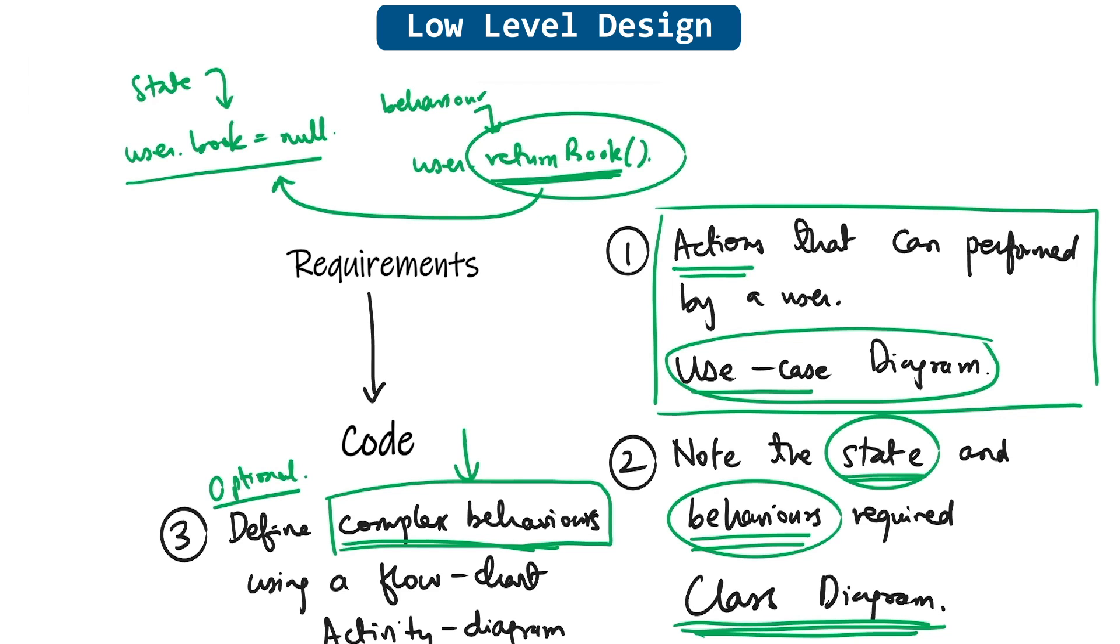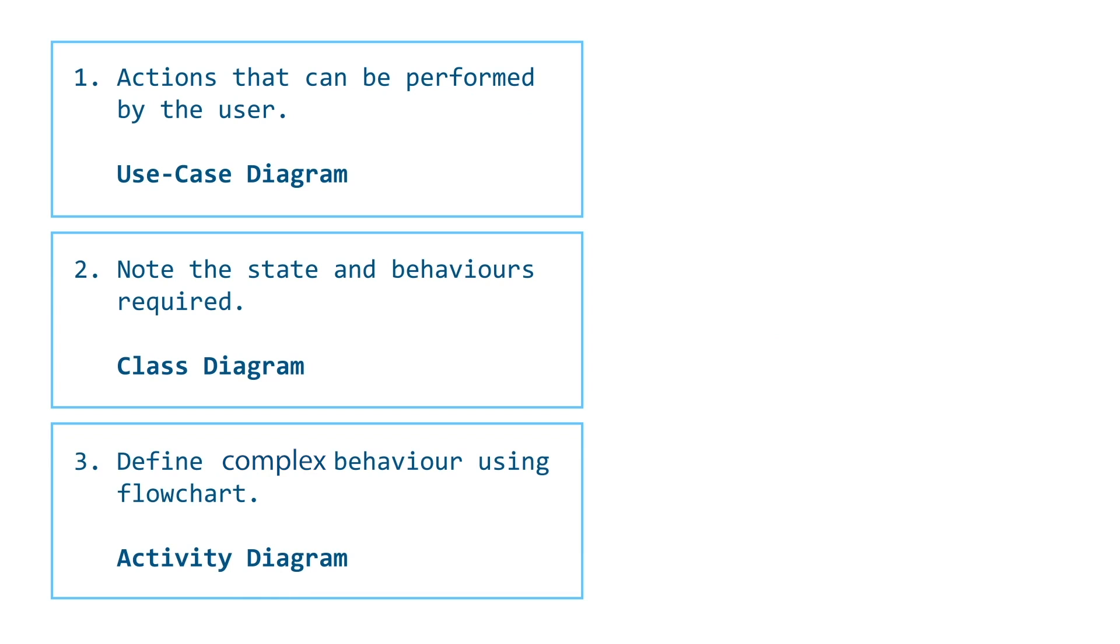Only after you have these three things done—so that is once you have defined the actions, then you have the state and the behavior, and then you have all complex behaviors modeled out—do you code.